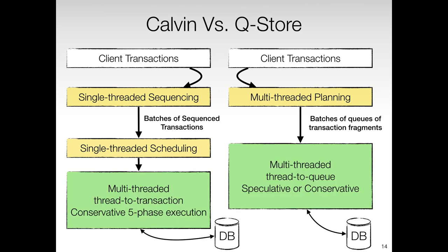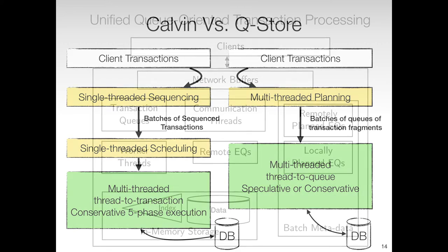The next phase is the execution phase. In Calvin, a transaction is assigned to a thread, while in Q-Store, a queue is assigned to a thread. Q-Store can perform speculative execution of transaction fragments, which allows reading uncommitted data speculating that it would commit later. For processing transactions that do not contain abort logic, the speculative approach works very well.